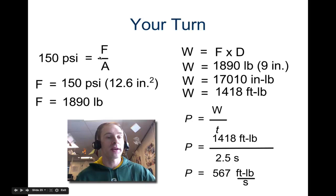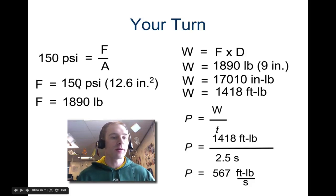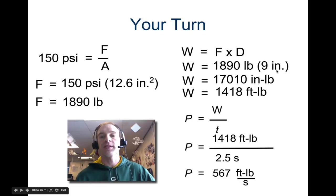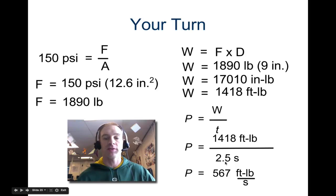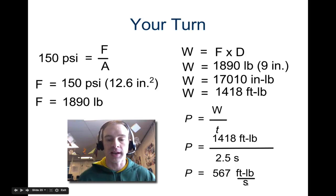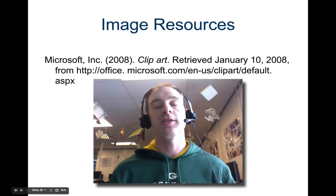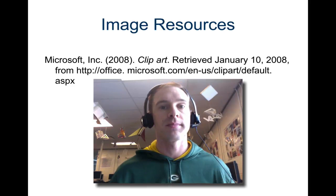So you start out with 150 psi equals force over area. If you use pi r squared, remember your radius was 2, you get an area of 12.6 square inches. So if you solve for force you get pressure times area. Remember you can make this a magic triangle. And you get 1,890 pounds. So that's your force. Your distance is 9 inches. So your work is 1,418 foot-pounds divided by time of 2.5 seconds is 568 foot-pounds per second divided again by 550 foot-pounds per second for one horsepower gives you a little bit over a horsepower. So that's it. Now you should work on your practice problems and let me know if you have any questions.